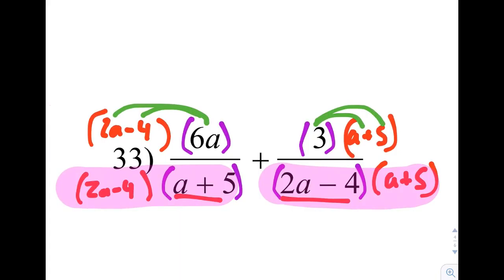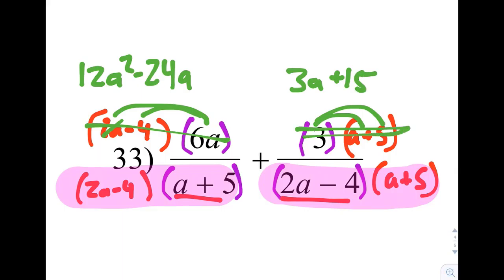So 6a times 2a is 12a squared. We also have 6a times negative 4, so negative 24a. Cross that out, because we have distributed, it is done. Over here, we have 3 times a is 3a. 3 times 5 is 15. Cross out that original one there.